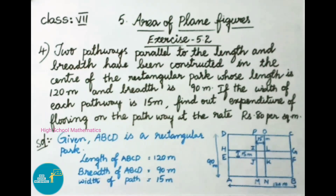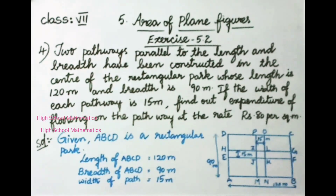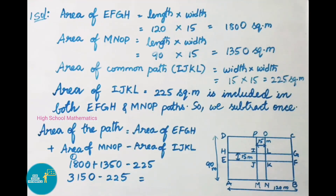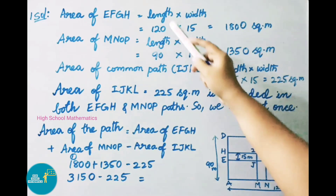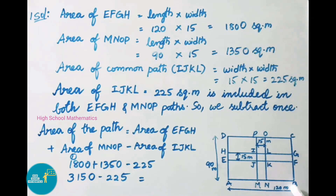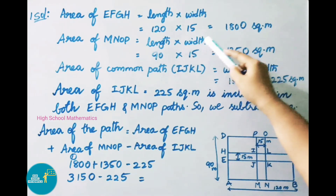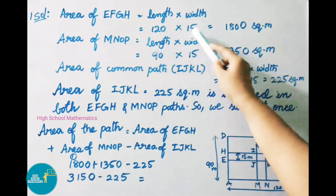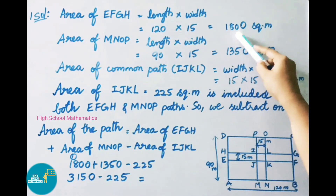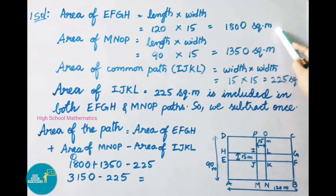Now we have to find the area of EFGH and MNOP, that is the paths constructed in the rectangular park. Let us find the area of EFGH: length into width equals 120 meters into 15 meters, that is 1800 square meters.